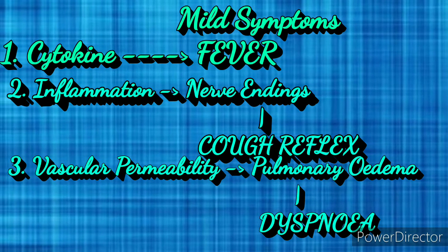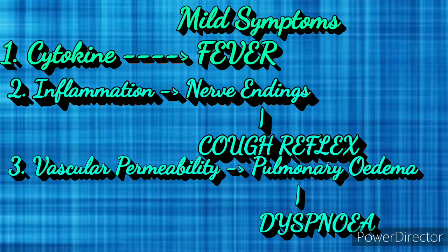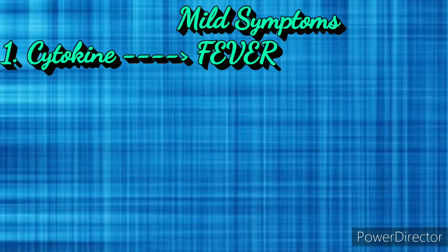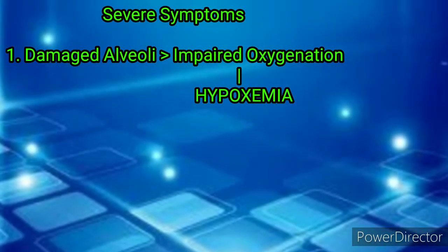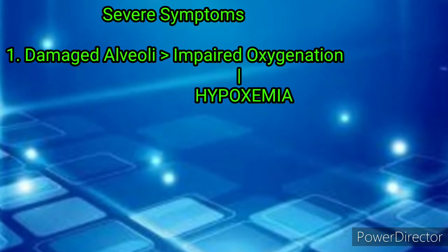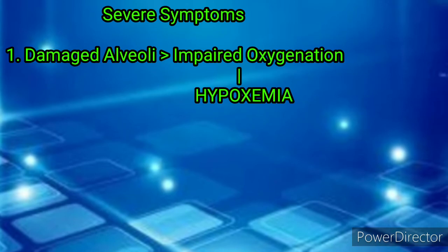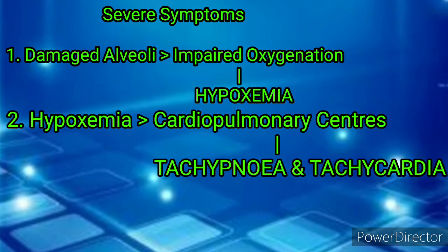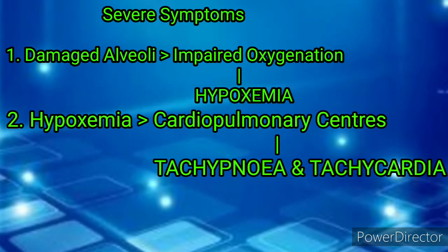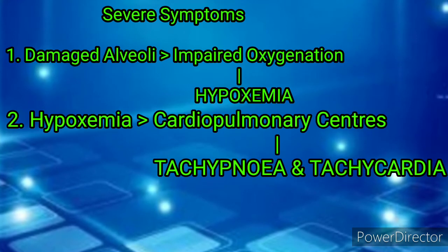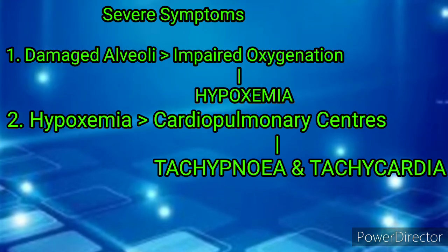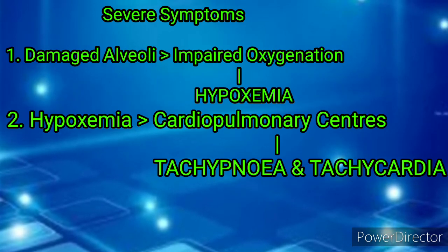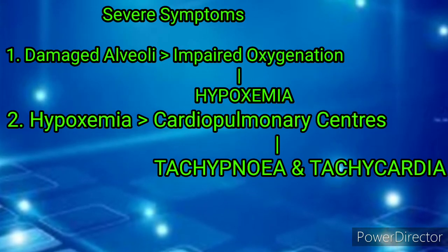These are the mild symptoms which can be represented in cases of strong immunity. In case of impaired immunity, severe symptoms are shown. Due to the overall damaged alveolar cells, the production of surfactant decreases, leading to alveolar collapse resulting in impaired oxygenation and thus hypoxemia. Hypoxemia, or decreased oxygen levels in blood, stimulates peripheral chemoreceptors in aortic and carotid bodies and central chemoreceptors in the brain, stimulating cardiopulmonary centers to instruct the lungs to breathe more and the heart to pump faster to deliver oxygen to the body. Therefore, patients are usually tachypneic or tachycardic.